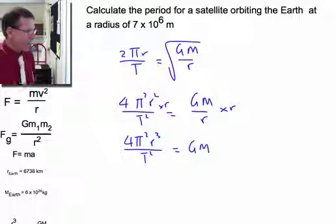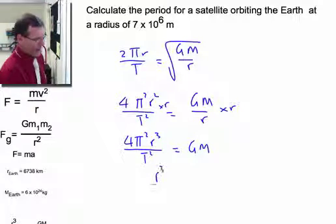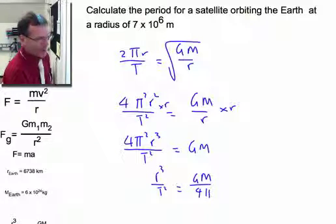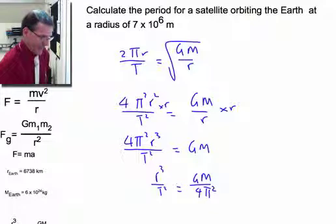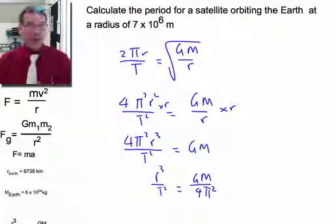And let's just pull the 4 pi squared over the other side. R cubed on T squared equals big G, big M on 4 pi squared. Now, why do we want to know about this and why is this so exciting?